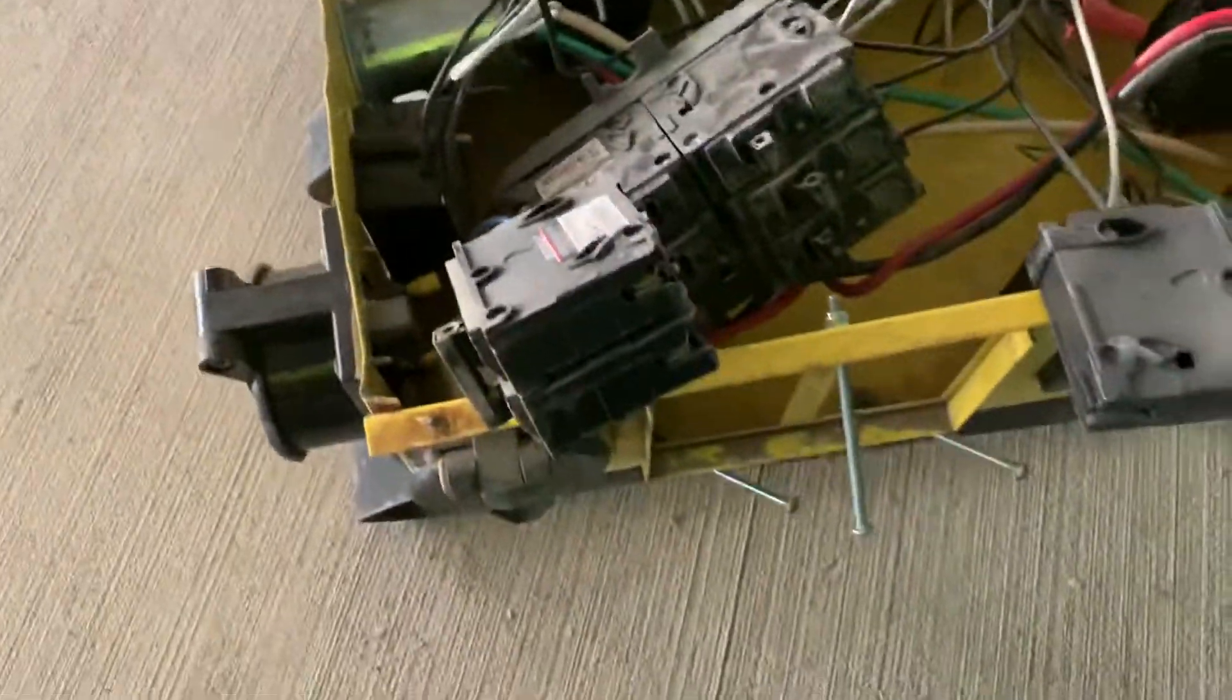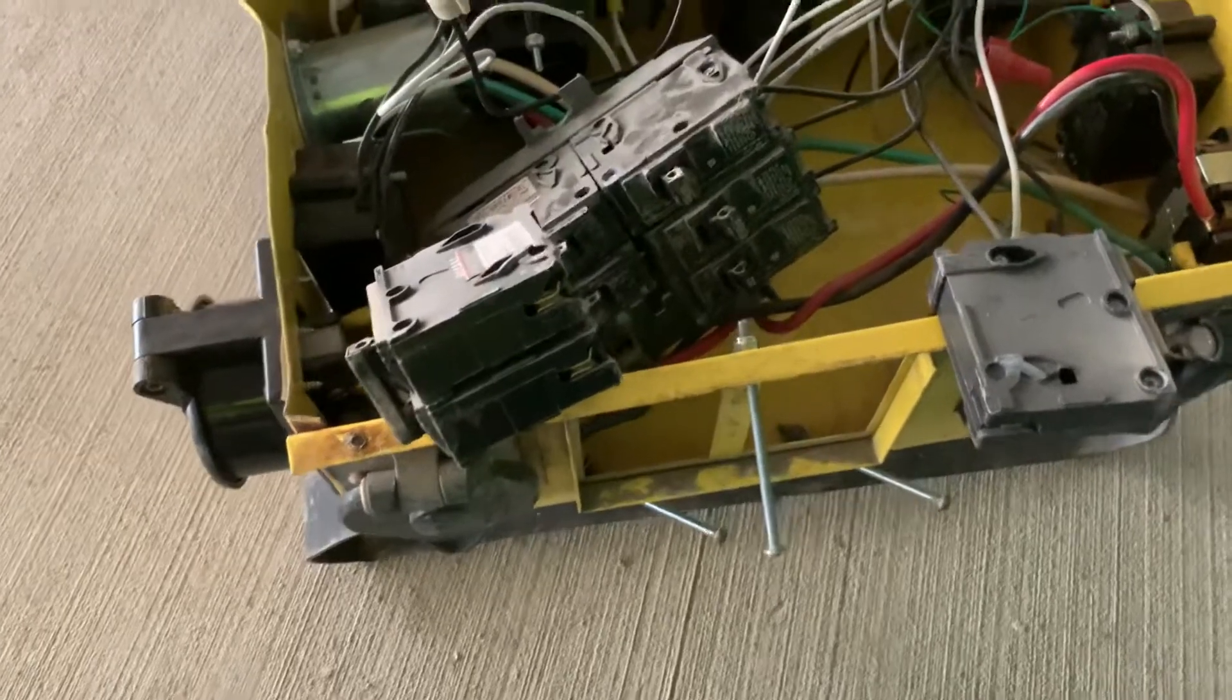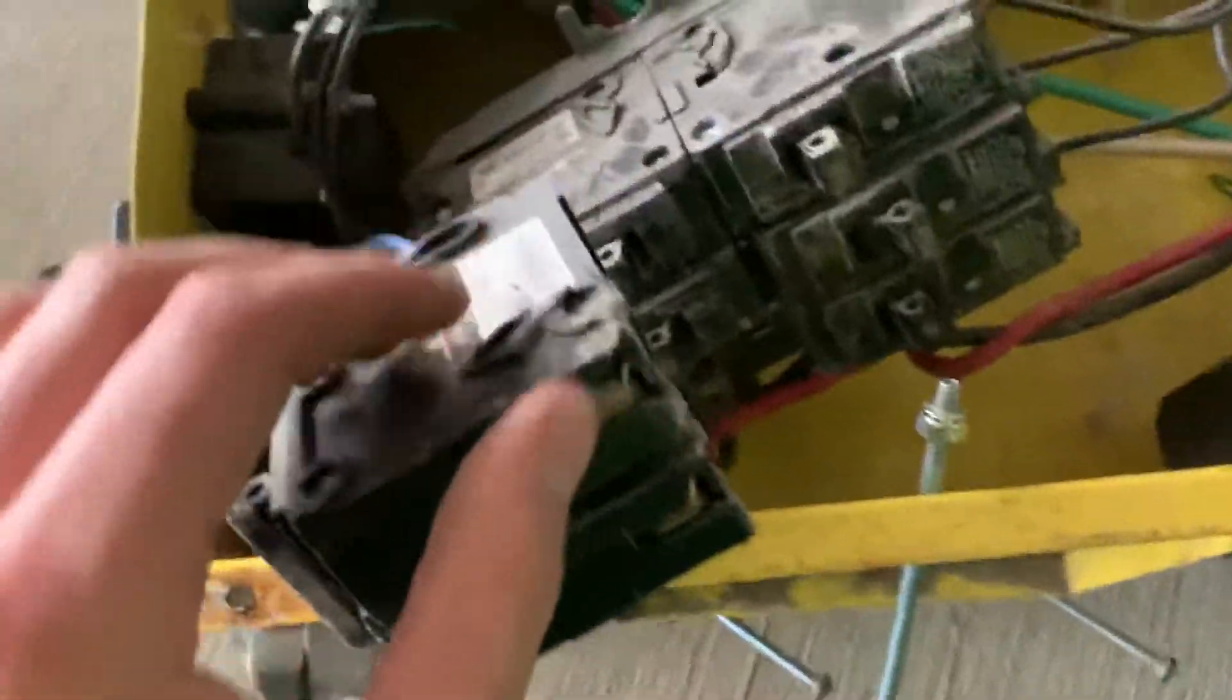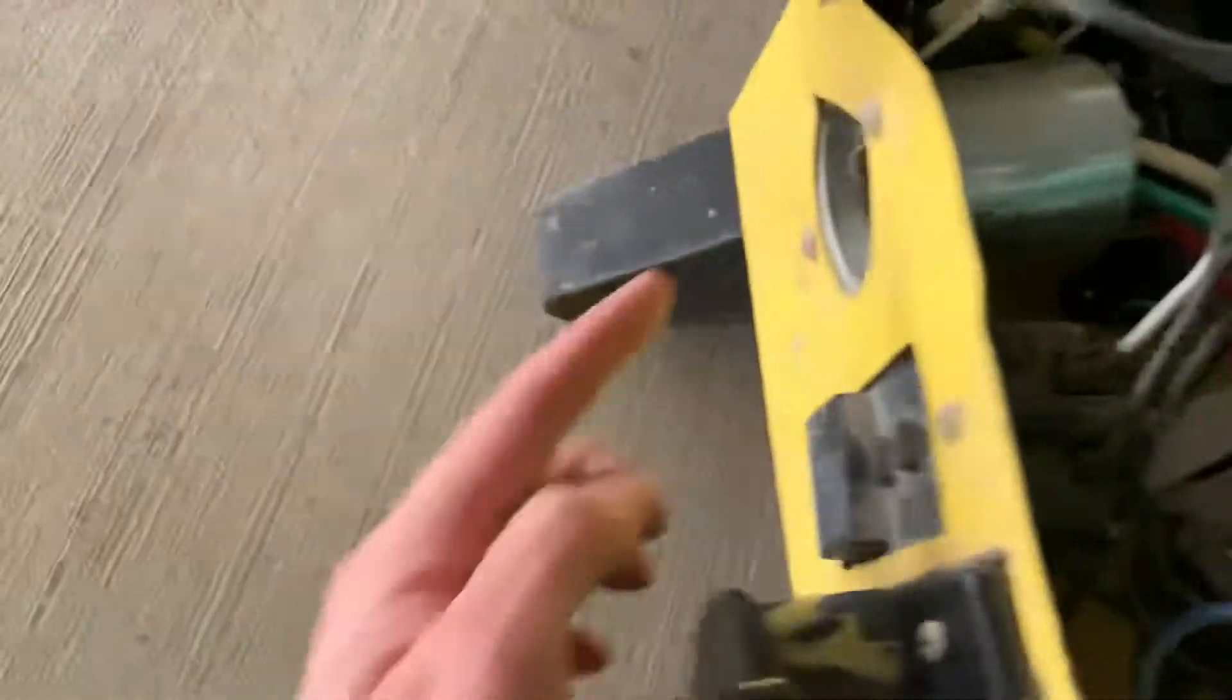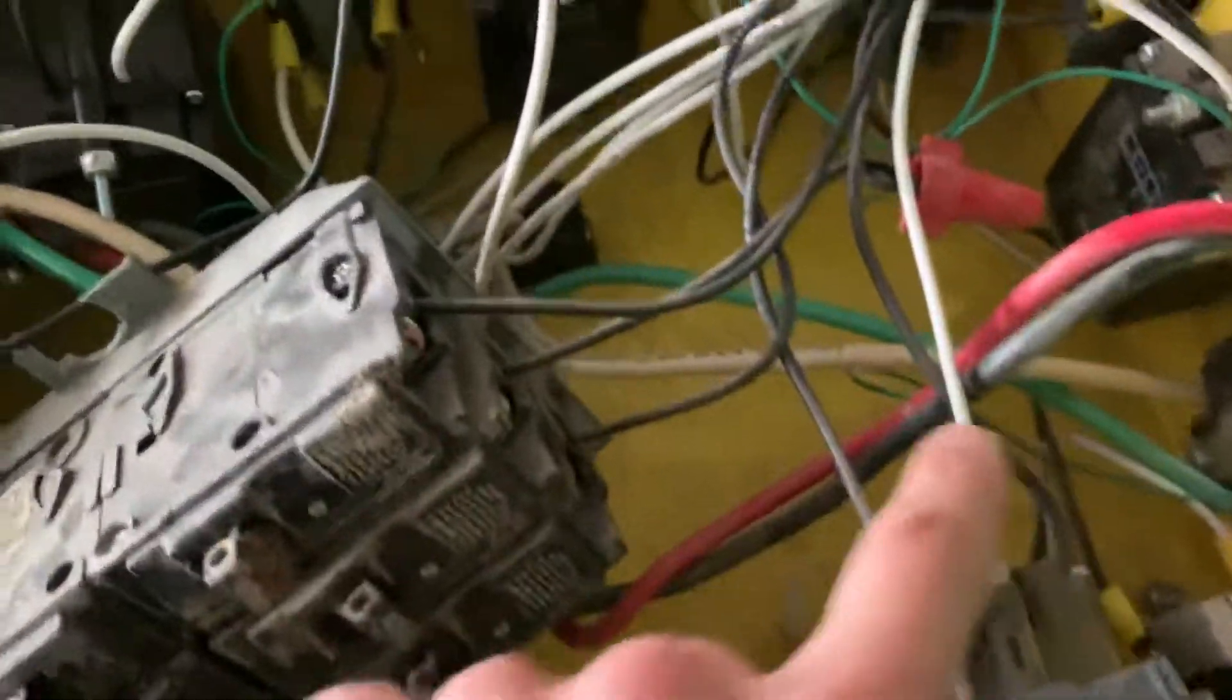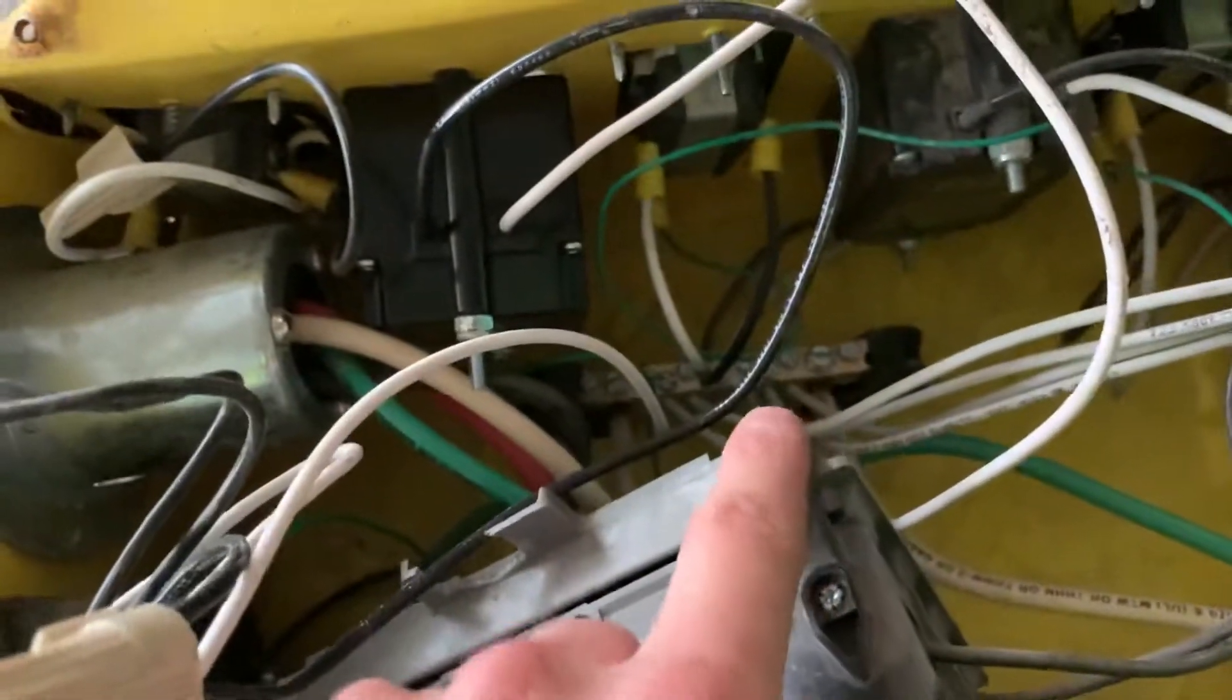What you got here is your breakers, which go usually right here. Basically, one side is your input power, the other side is your output power. And then those run down to the neutral bar and the ground bar right down there.